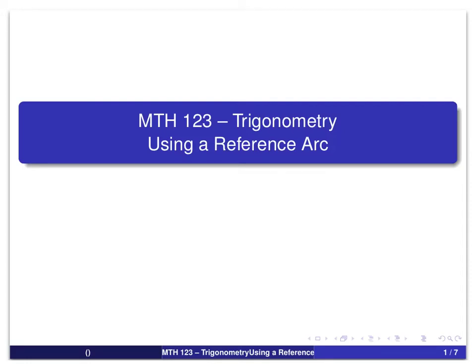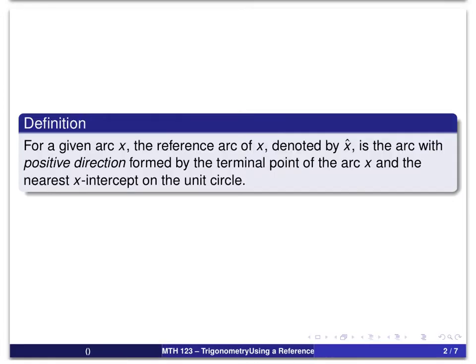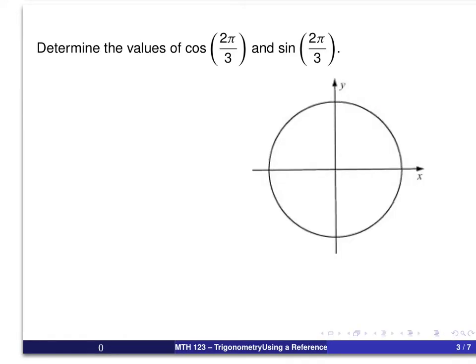Hello and welcome to this screencast for Math 123. Today we're going to discuss how to use a reference arc for a given arc to find the sine and cosine values for that arc. To do this we need to know the definition of a reference arc, and we will assume in this screencast that you are already familiar with this definition. Here is the definition for the reference arc, and now we're going to use this idea to find the sine and cosine values for 2π/3.